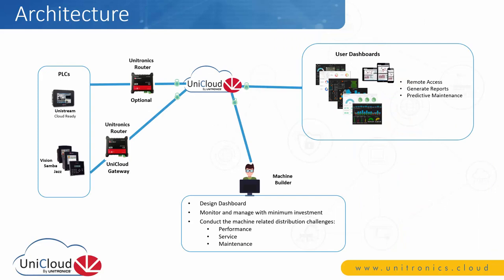Looking at the UniCloud architecture, devices that can connect include the UniStream, which is cloud-ready and just needs an internet connection — either via an existing network or Unitronics UCR routers combined with a SIM card for cellular. The Vision, Samba, and Jazz controllers all require the UCR router as a gateway. Notably, third-party devices that support Modbus can also be integrated to UniCloud using the UCR router as a gateway.